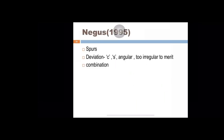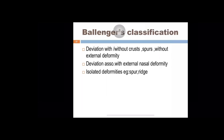Neger's classification: can be divided into spurs, deviation, or a combination of spurs and deviation. Deviation can be C-shaped, S-shaped, angular deviation, or too irregular to merit classification. Ballinger's classification: deviation without external deformity, deviation associated with external nasal deformity, and isolated deformity such as spur and bridge. The most important of these are Cottle's classification and Mladina's classification. The others are of historical importance.